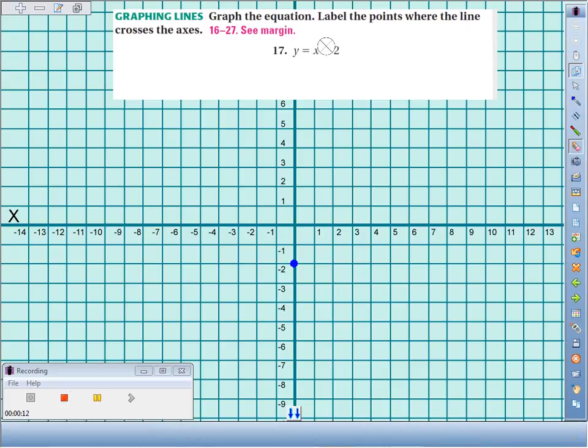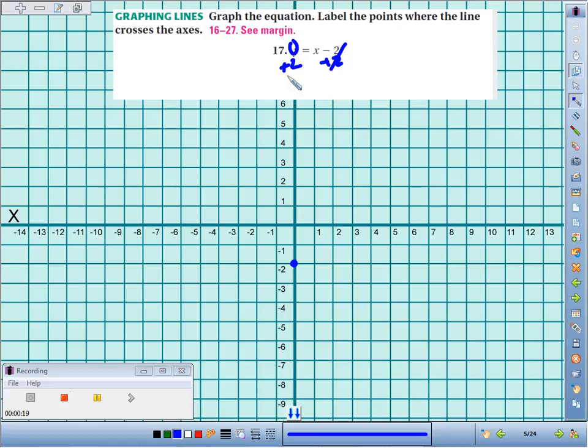Now I'm going to find my x-intercept, so I'm going to set y equal to 0 and solve for x. So I'd add 2 to both sides, and we get that the x-intercept is 0 plus 2, or 2.